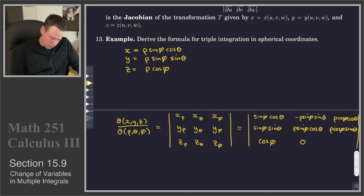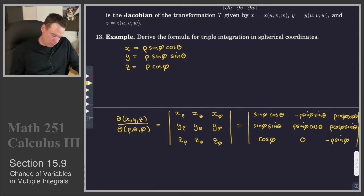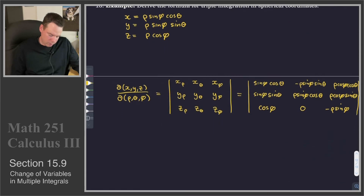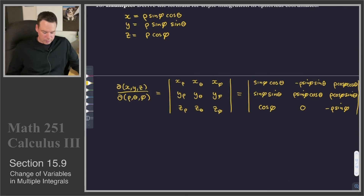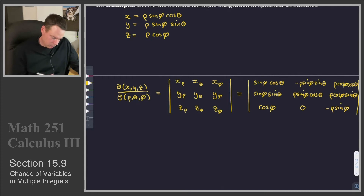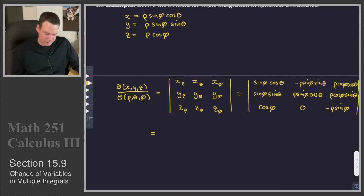And then for the z row, the entries are zero and negative rho sine phi. Now we need to compute the determinant of this. For the determinant, we can expand along any row or column. What I'm going to do is expand along the last row, because that involves a zero.